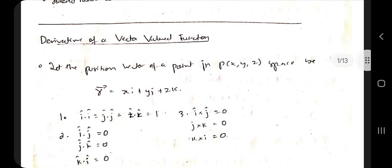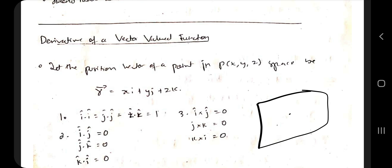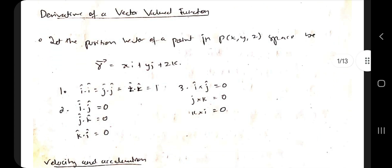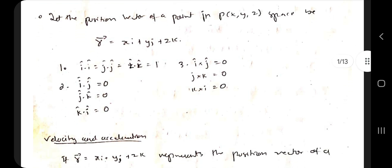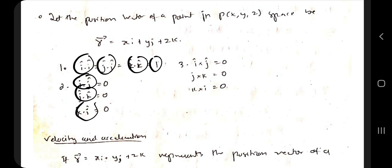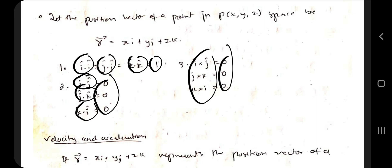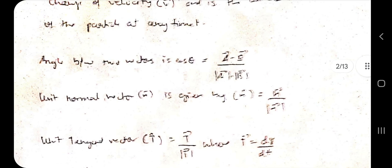Let's get started with the first topic: the derivative of a vector-valued function. If there is a point P in space comprised of x, y, and z values, then the vector function is given by xi + yj + zk. The dot product of the same unit vectors is one and adjacent ones is zero. For a moving particle, differentiating position with respect to time t gives velocity, and differentiating velocity gives acceleration.